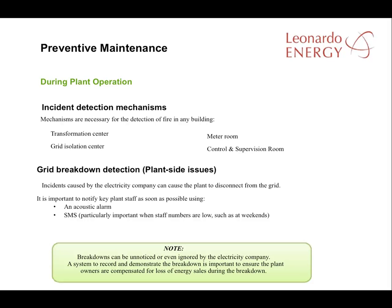For every potential incident, you will need to establish an incident detection mechanism. In your planning, you should rank every potential incident according to its probability and the damage it might produce. For example, a fire in the control or supervision room is not very probable, but the potential damage is severe — therefore a detection mechanism for that incident is a high priority. Breaks in the grid connection are often the responsibility of the electricity company that the solar plant supplies. However, these breakdowns can sometimes pass unnoticed by the electricity company or perhaps even be ignored by them. So a detection mechanism that alerts a person with responsibility for the solar plant whenever there is a disconnection from the grid is important. If the breakdown is not properly noted or recorded, it could affect the compensation that the solar plant will receive.